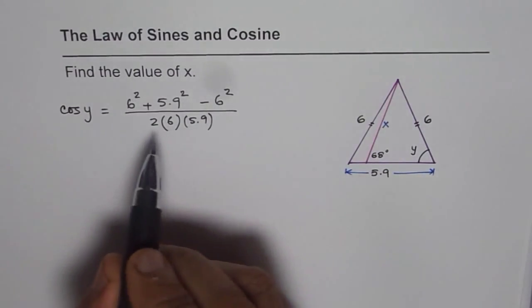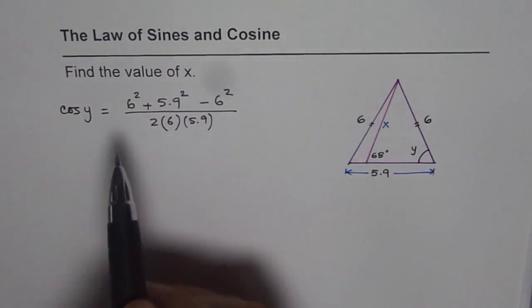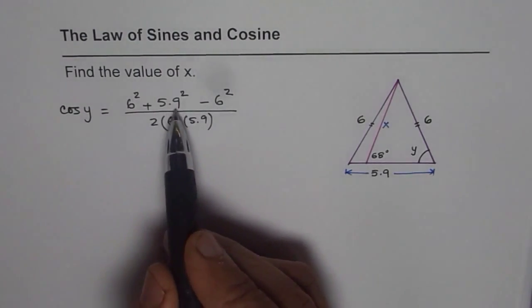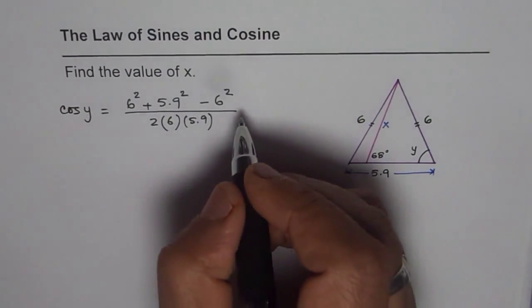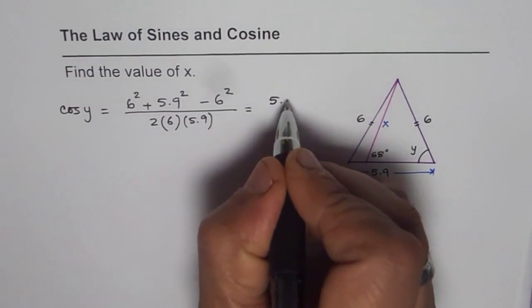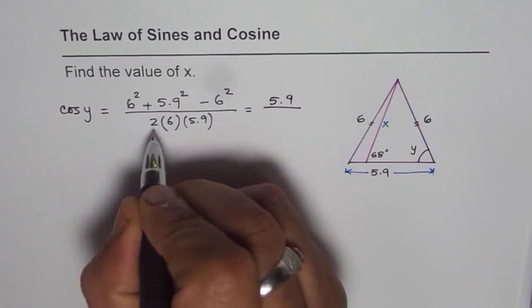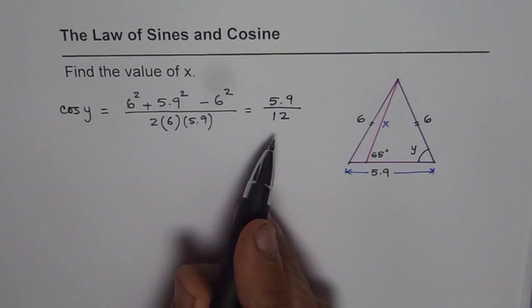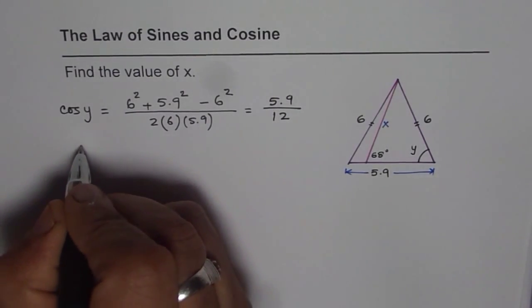Now you will see, when it's an isosceles triangle, 6 squared minus 6 squared is 0, and then you get 5.9 divided by 5.9, it cancels out. So you are left with cos y equals 5.9 over 12. So it simplifies to this.